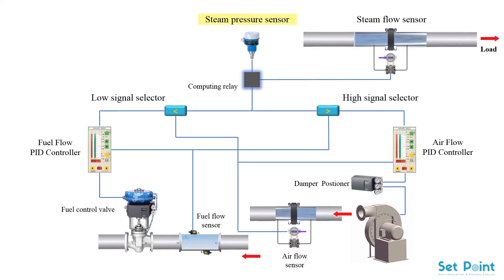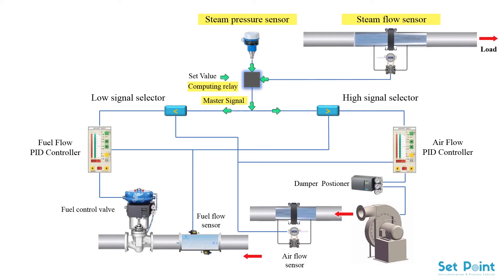The steam pressure and the flow signal are transmitted to the computing relay. The computing relay generates the master signal depending on the load of the boiler, as this master signal represents the fuel required by the boiler. The master signal is then fed as a set value to the low and high signal selectors.